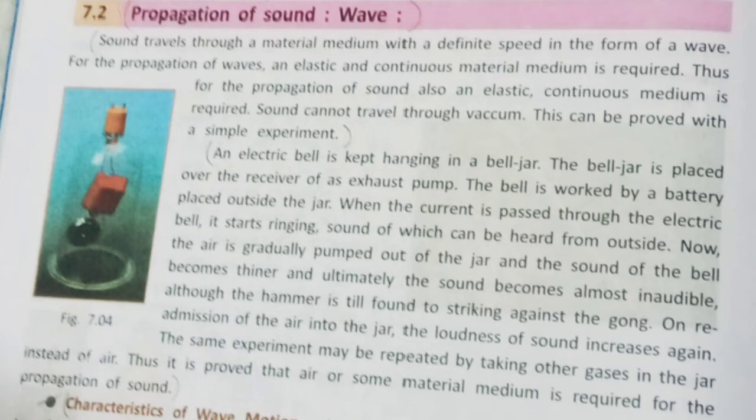This is the bell jar experiment. An electric bell is kept hanging in a bell jar. The bell jar is placed over the receiver of an exhaust pump. The bell is worked by a battery placed outside the jar. When current is passed through the electric bell, it starts ringing — we can hear the sound.